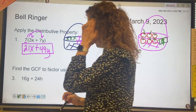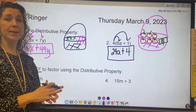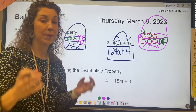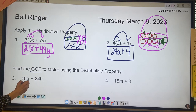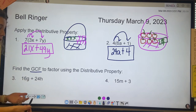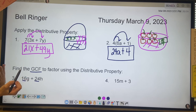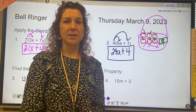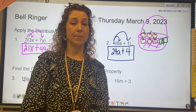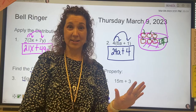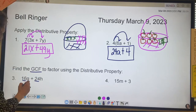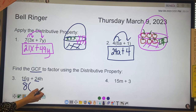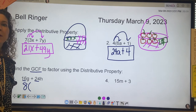Now let's look at numbers 3 and 4. We're going to find the GCF — the greatest common factor — and we're going to use the distributive property. So 16g plus 24h: we are going to find the greatest common factor for 16 and 24. I know 2 goes into both, I know 4 goes into both, but the greatest common factor is 8. So we're going to factor out the 8 — use the 8 multiplication vacuum to suck out the 8.